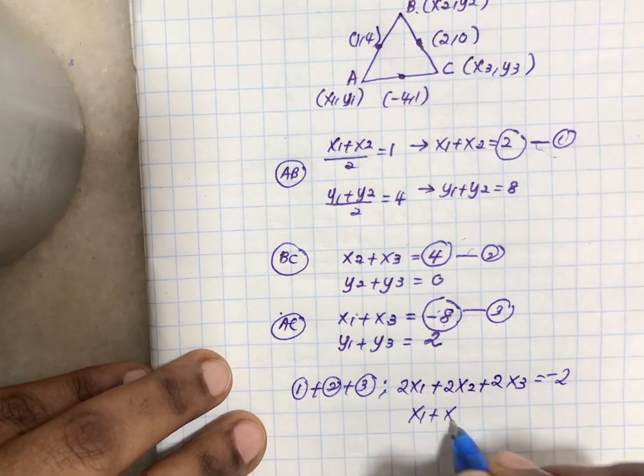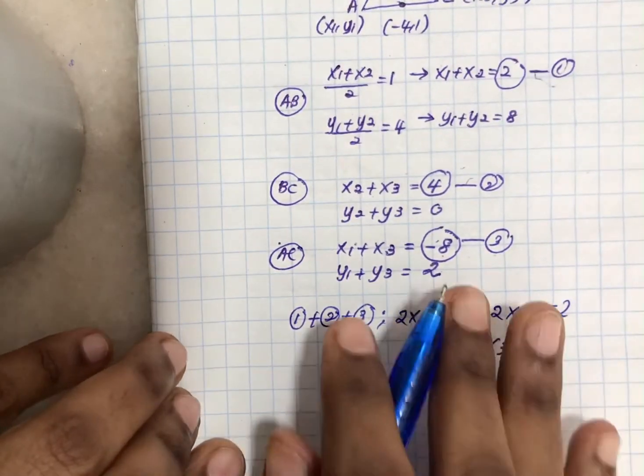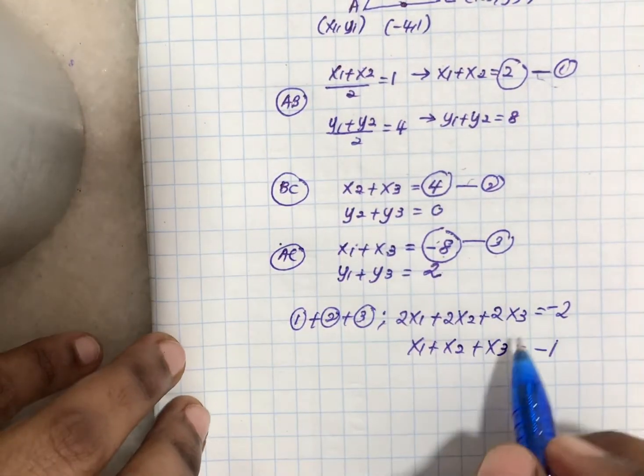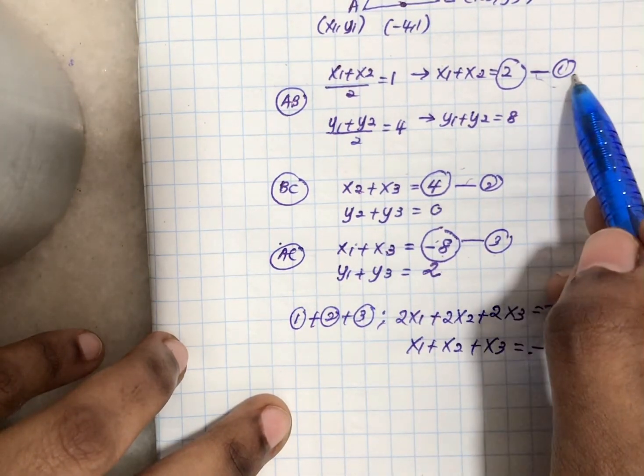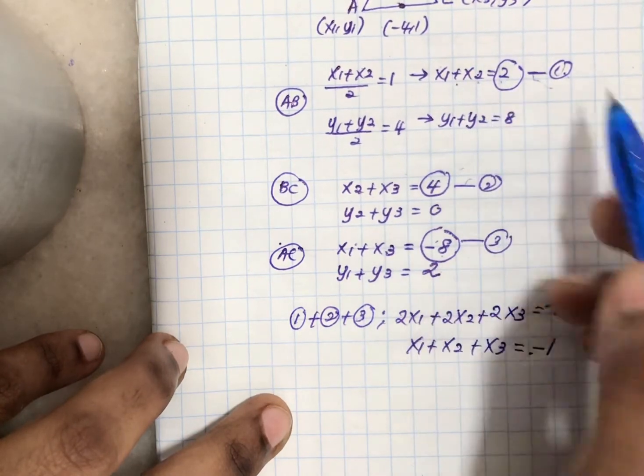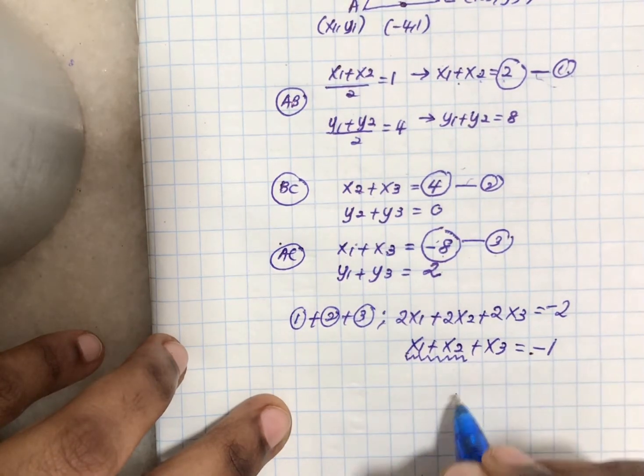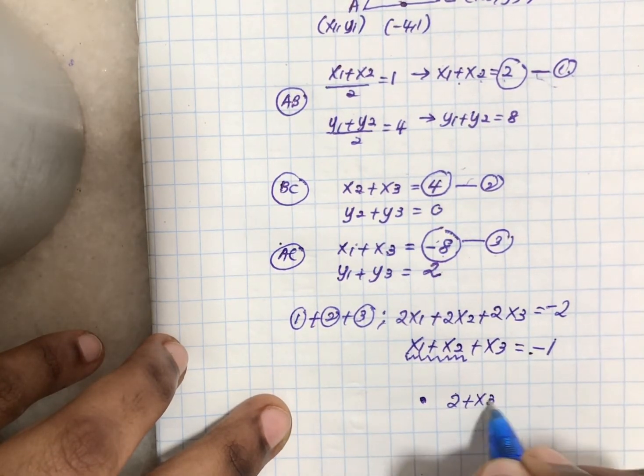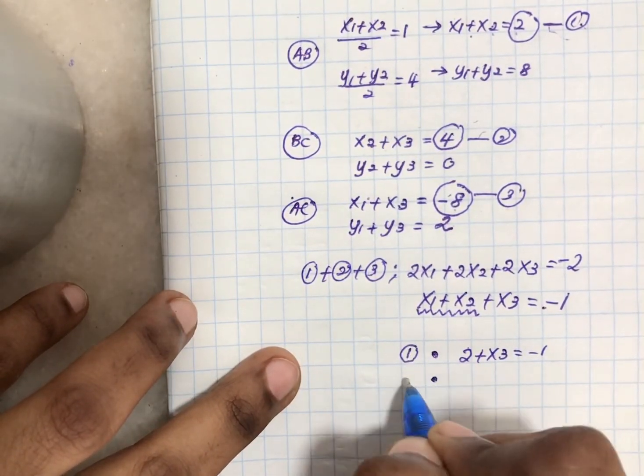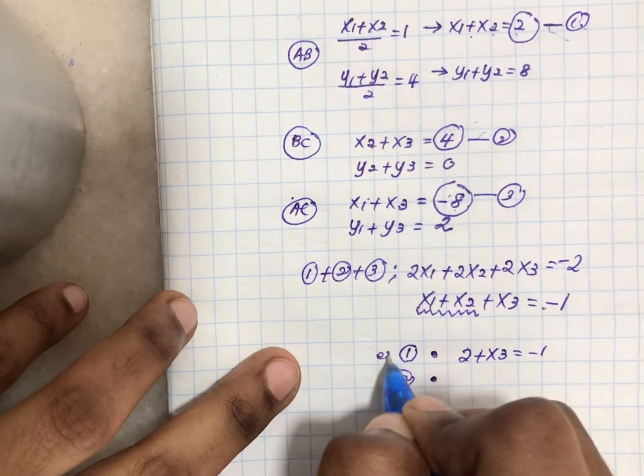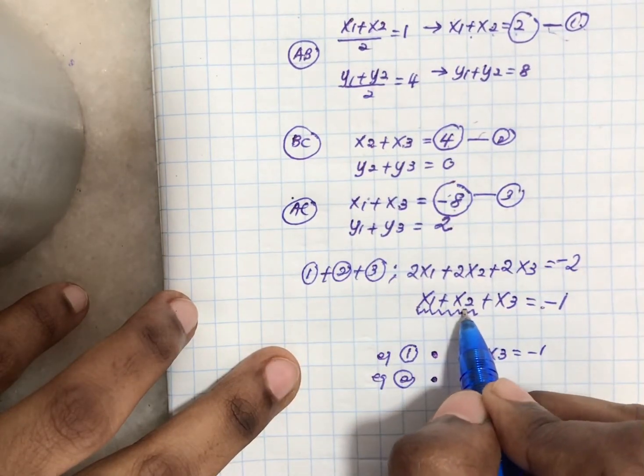When I simplify, I get x1+x2+x3 = -1. I'll do the same thing with y later. Now, from equation 1, I know x1+x2 = 2, so substituting here: 2+x3 = -1. The same way, if I input equation 2, x2+x3 = 4, that gives me another equation. And when you input equation 3, x1+x3, that helps me find x2.